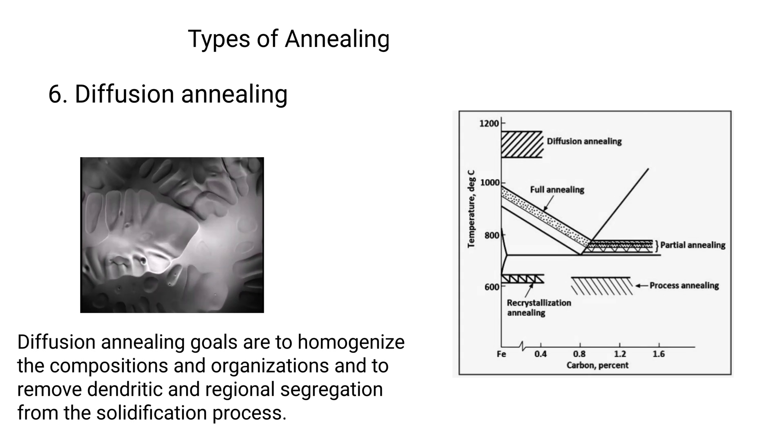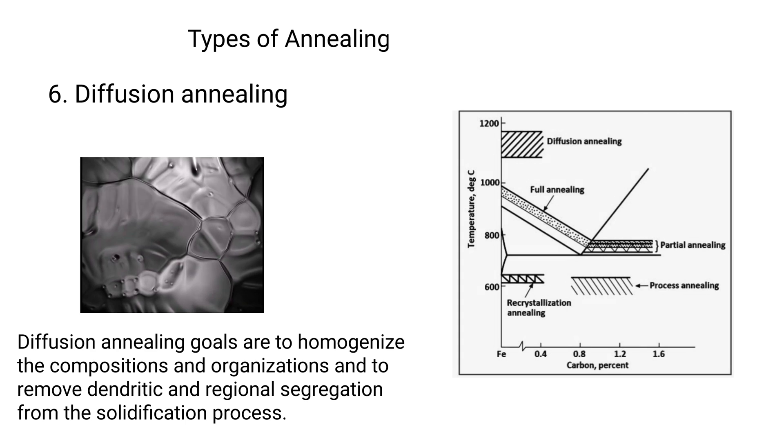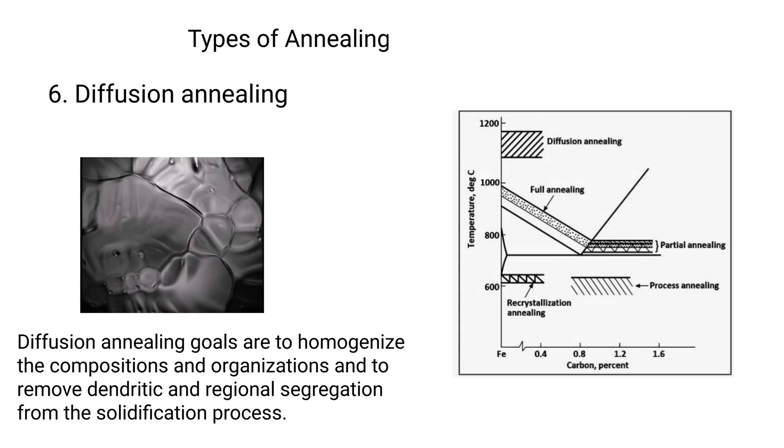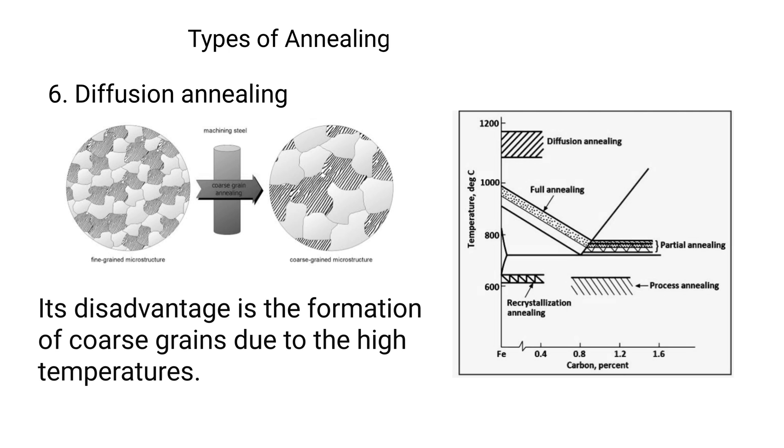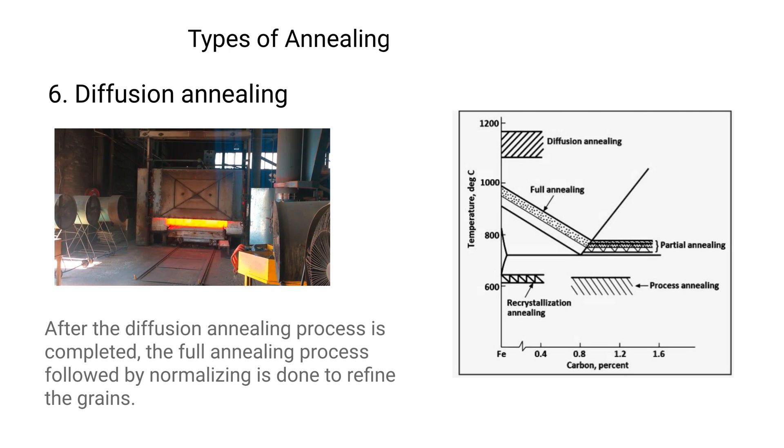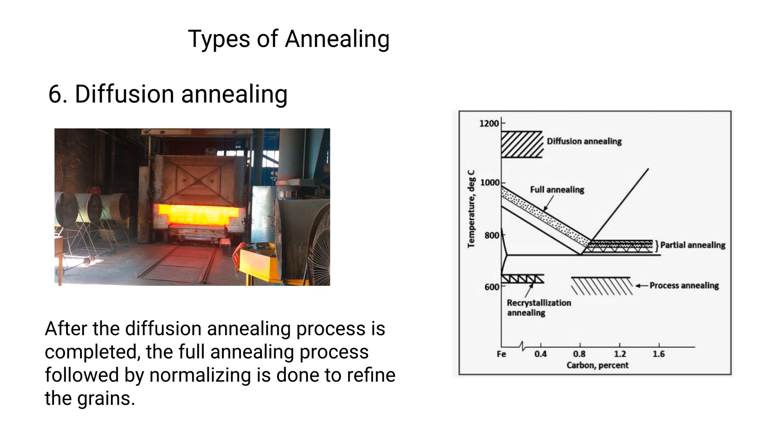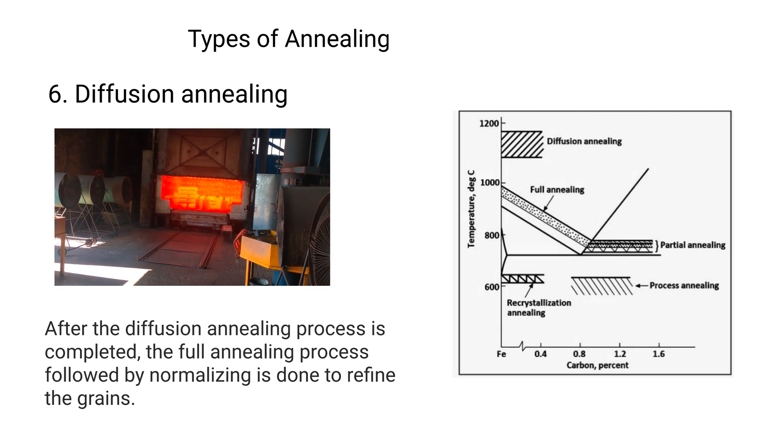The diffusion annealing goals are to homogenize the composition and organization and to remove dendritic and regional segregation from the solidification process. Its disadvantage is the formation of coarse grains due to the high temperatures. After the diffusion annealing process is completed, the full annealing process followed by normalizing is done to refine the grains.